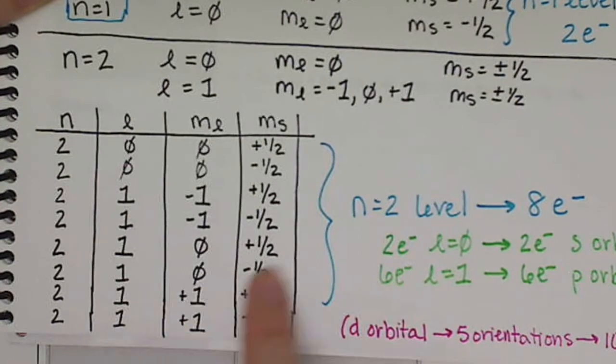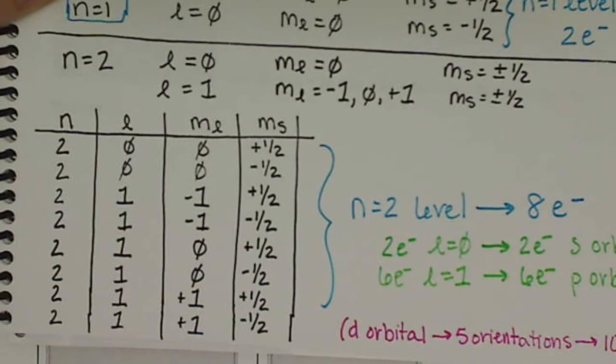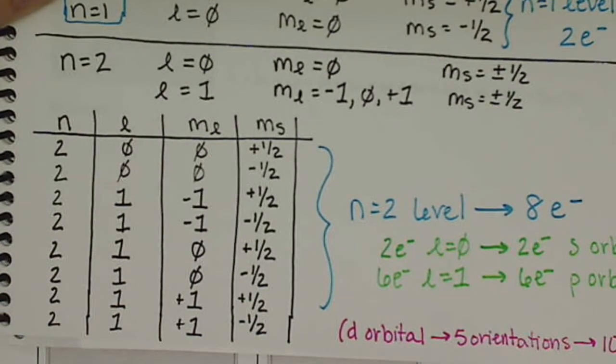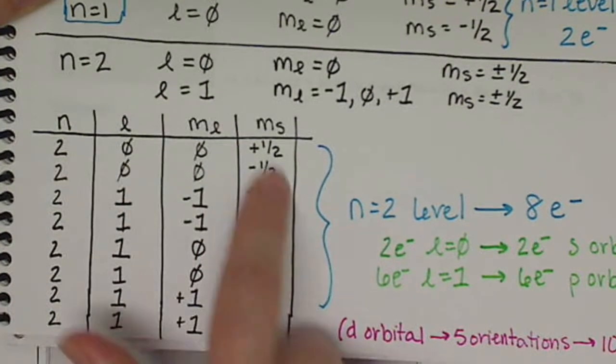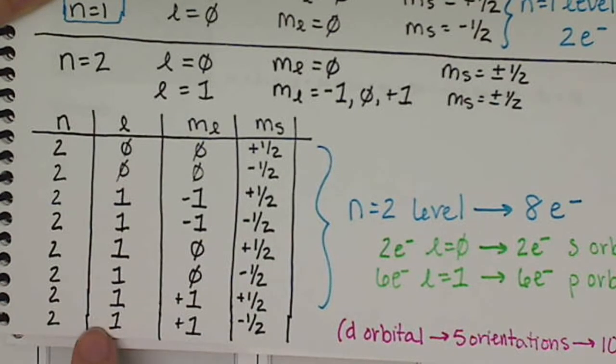So we have quantum numbers, and they can describe our electrons just fine. It tells us what orbital they're in, what orientation they are, and what spin they are. But describing electrons in this fashion gets really tedious really quickly.